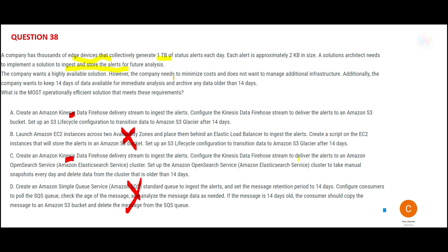My answer is A, not C. Here is why: option A uses Kinesis Firehose to ingest the alerts, delivers them to an S3 bucket, and applies an S3 lifecycle configuration to transition the data to Glacier after 14 days — matching the 'older than 14 days' requirement stated in the question.